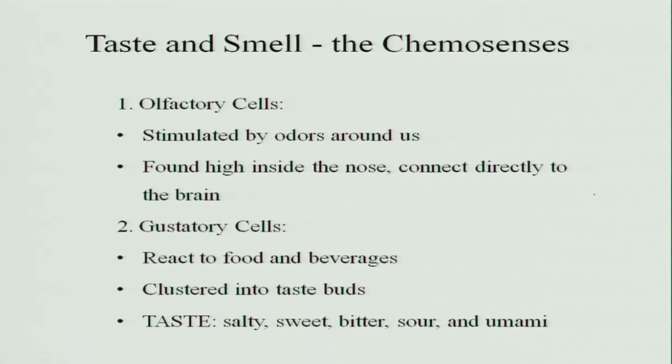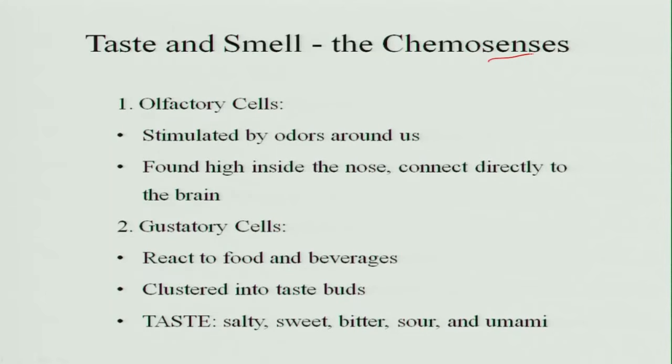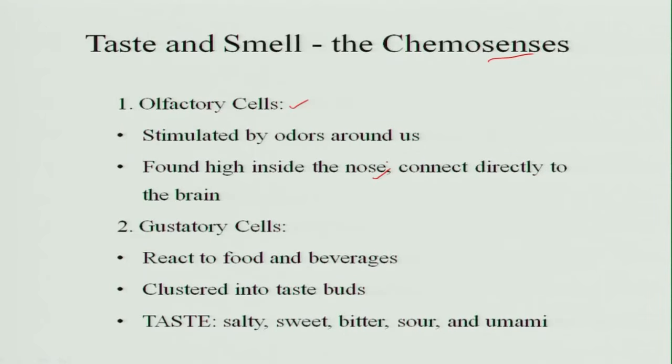Taste and smell are chemo senses. We feel hungry sometimes because of the sight of food, the flavor or smell of food. We have olfactory cells which are stimulated by odors around us — for example, passing through a food court, certain smells attract you to eat. These olfactory cells are found inside the nose and are connected directly to the brain, sending impulses that signal you to continue eating.